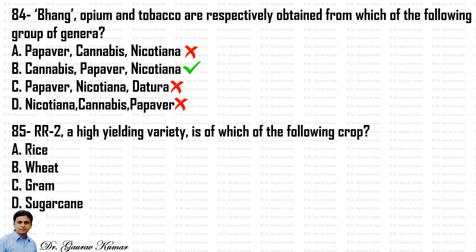RR2, a high yielding variety, is of which crop? RR2 is actually the high yielding variety of wheat. So the answer is B — RR2 is the high yielding variety of wheat.